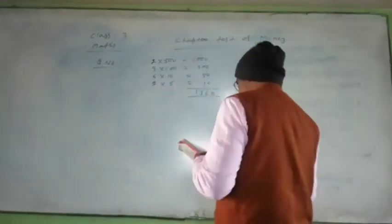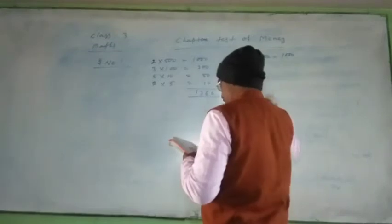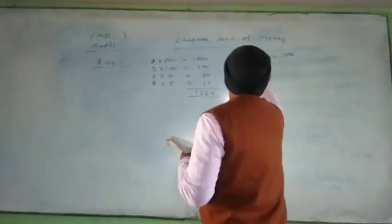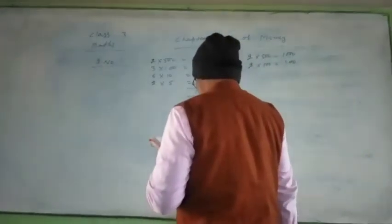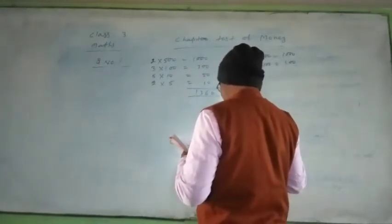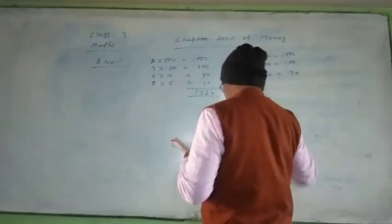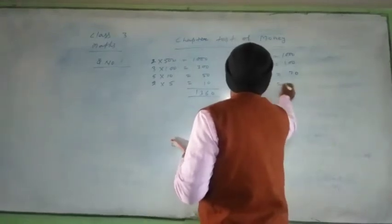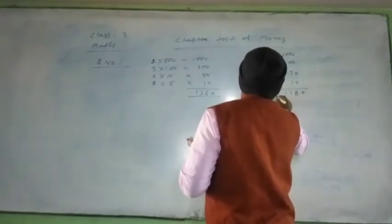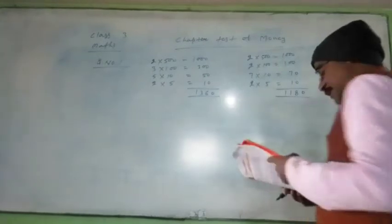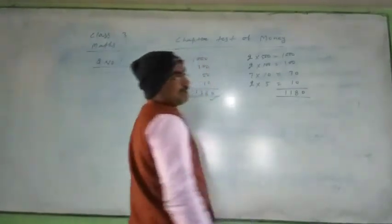His sister has two 500 notes equal 1000, one 100 rupee note equal 100, seven 10 rupee notes equal 70 rupees, and two 5 rupee notes equal 10 rupees. Total is 1,180 rupees. In this way, you see Aman has more money in his piggy bank.